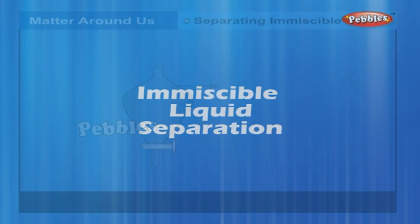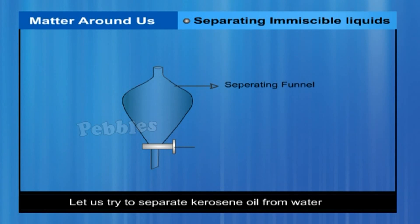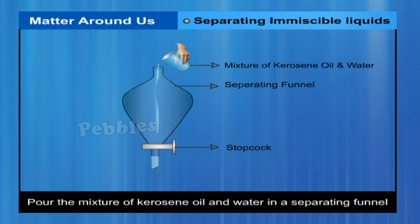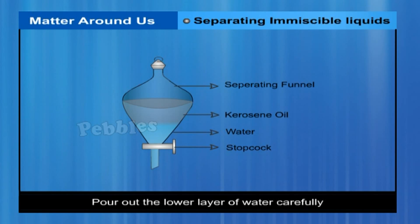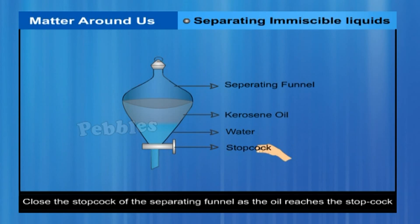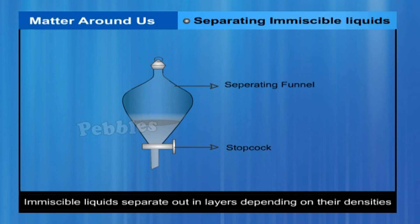Let us try to separate kerosene oil from water using a separating funnel. Pour the mixture of kerosene oil and water into the separating funnel. Let it stand undisturbed for some time so that separate layers of oil and water are formed. Open the stopcock and pour out the lower layer of water carefully. Close the stopcock as the oil reaches it. The principle is that immiscible liquids separate into layers depending on their densities.